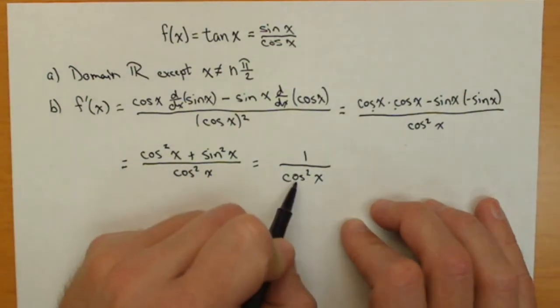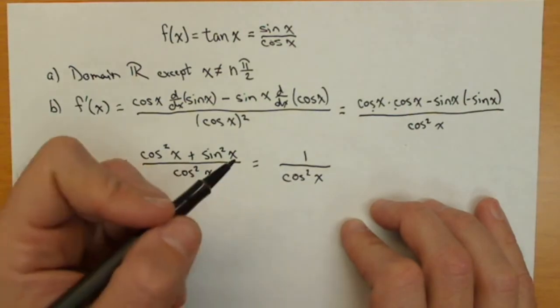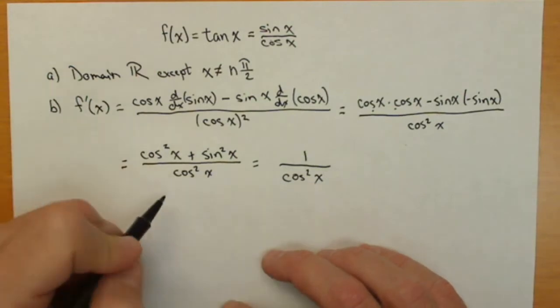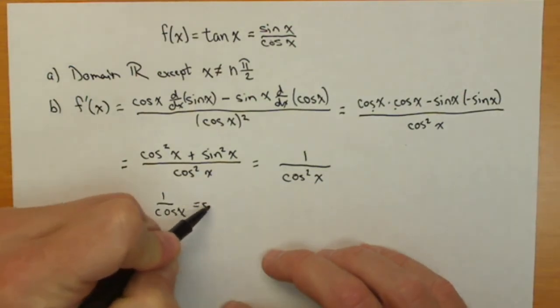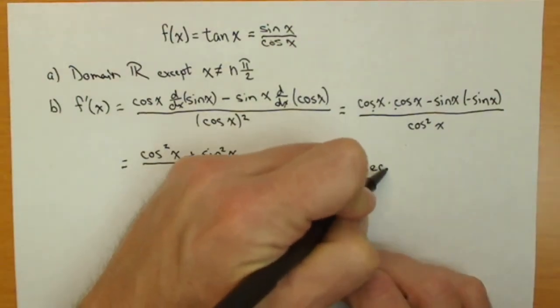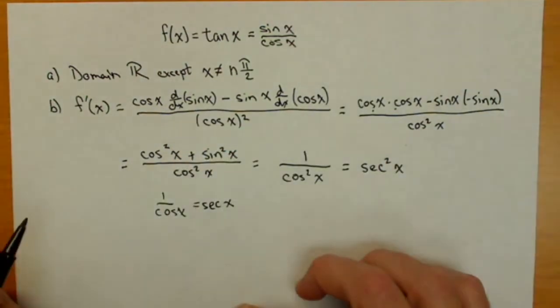So that makes this thing a lot simpler. The derivative of tangent is 1 over cosine squared of x. Or, remember, 1 over cosine x equals secant x. So another way we could write this derivative is secant squared x.